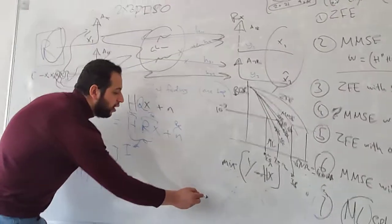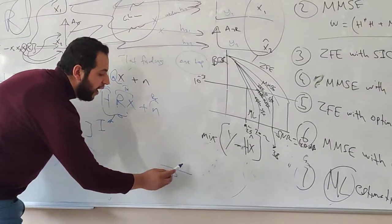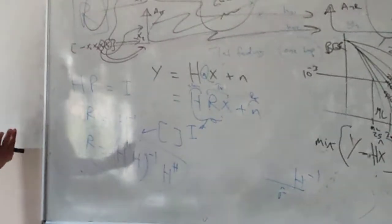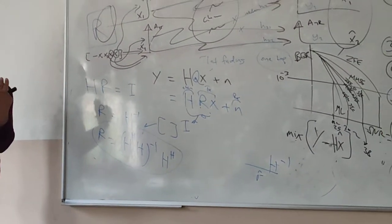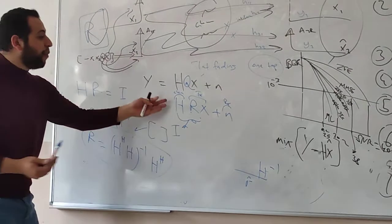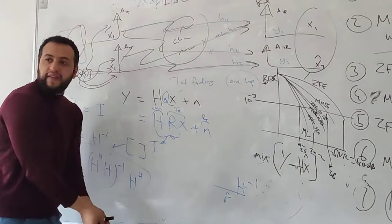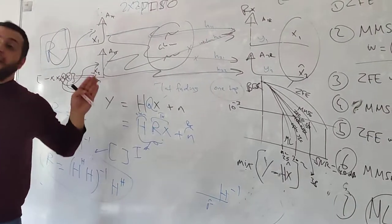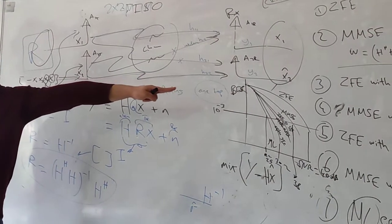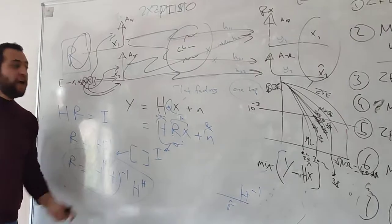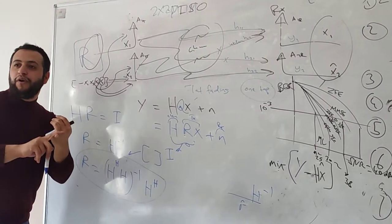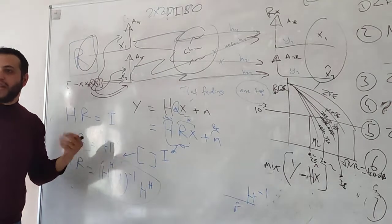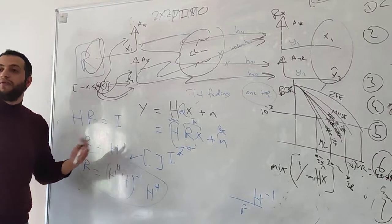At the receiver, you multiply by H inverse. When you do this before you send your data, by the time the signal reaches the receiver, the channel effect and R cancel each other. The receiver will receive X plus some noise and can immediately detect it without any additional processing. So you save battery on your phone, you don't do any processing, you quickly detect with low delay.